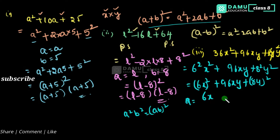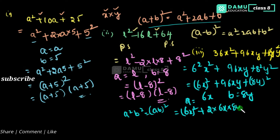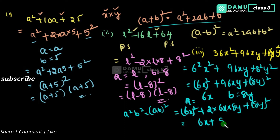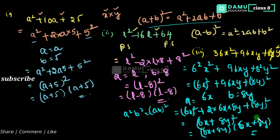So a equals 6x and b equals 8y. Then 2ab equals 2 into 6x into 8y — that is 2 times 6 times 8 equals 96, giving 96xy. This confirms the (a + b) whole square pattern. So the answer is (6x + 8y) whole square, which equals (6x + 8y) into (6x + 8y).